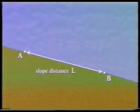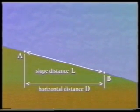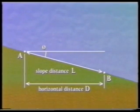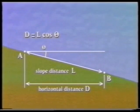When measuring along the ground surface, the ground will almost always be sloping, so the distance obtained will be the slope distance. If a horizontal distance is required, it is necessary to change the slope length L into the horizontal distance D. If the angle of slope theta has been measured using a theodolite, for example, then D equals L cos theta.